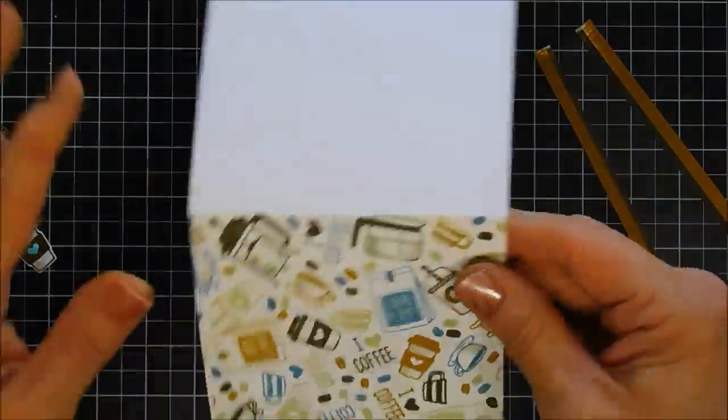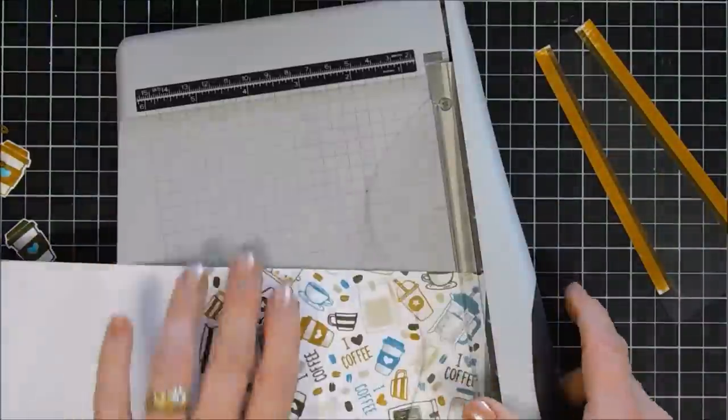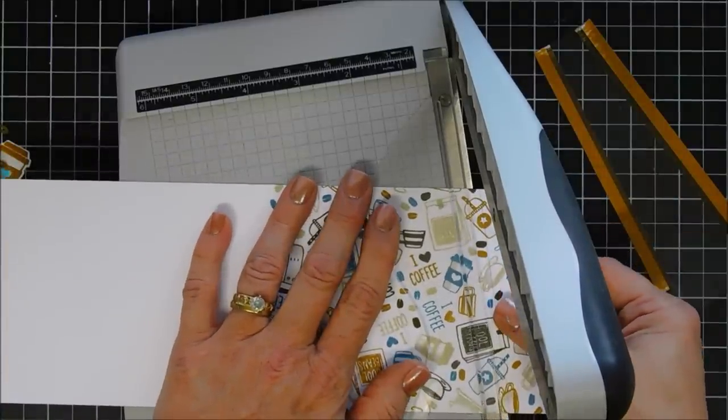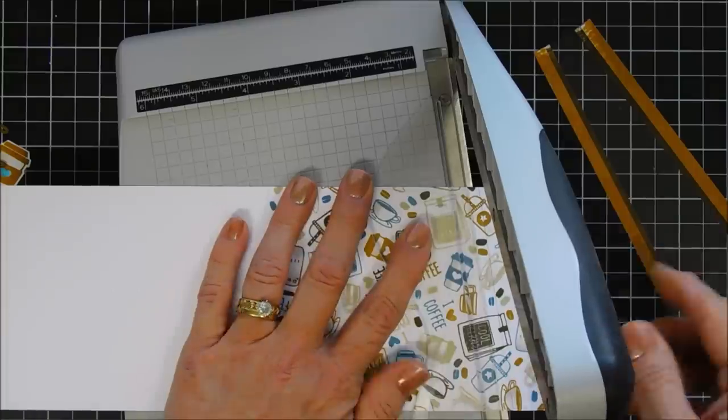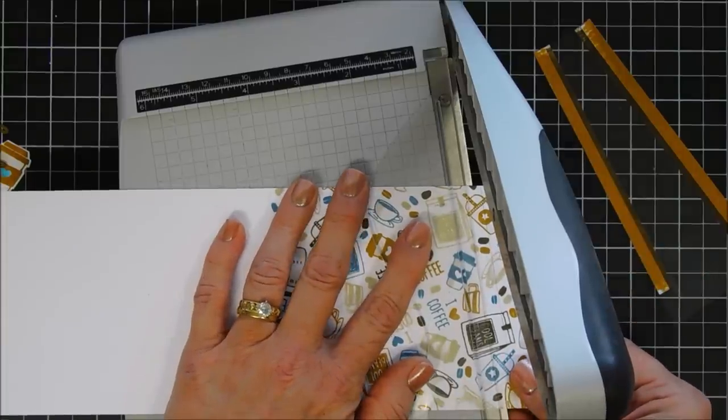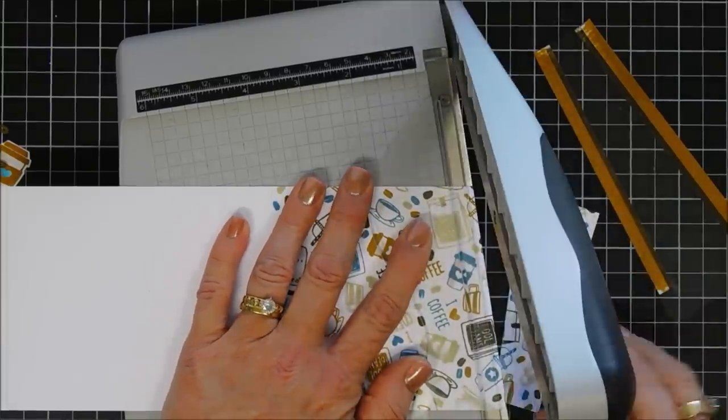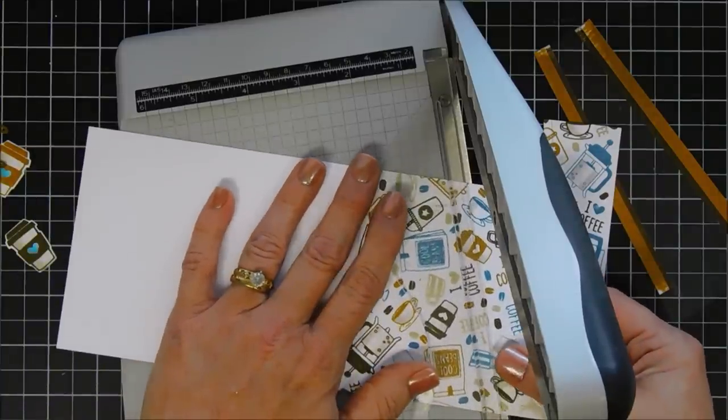When I do trim it I'm going just past the pencil mark line, so it's a little bit wider than that pencil mark line. This is going to give me a little room for when I glue. That middle piece we're not going to use but I did use it for another card.